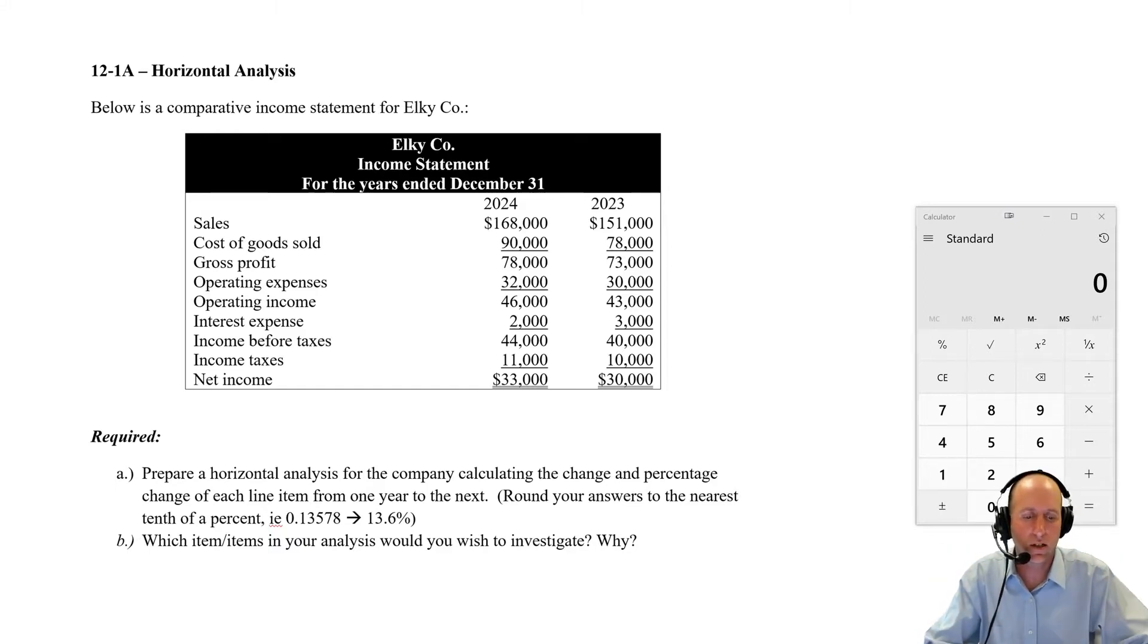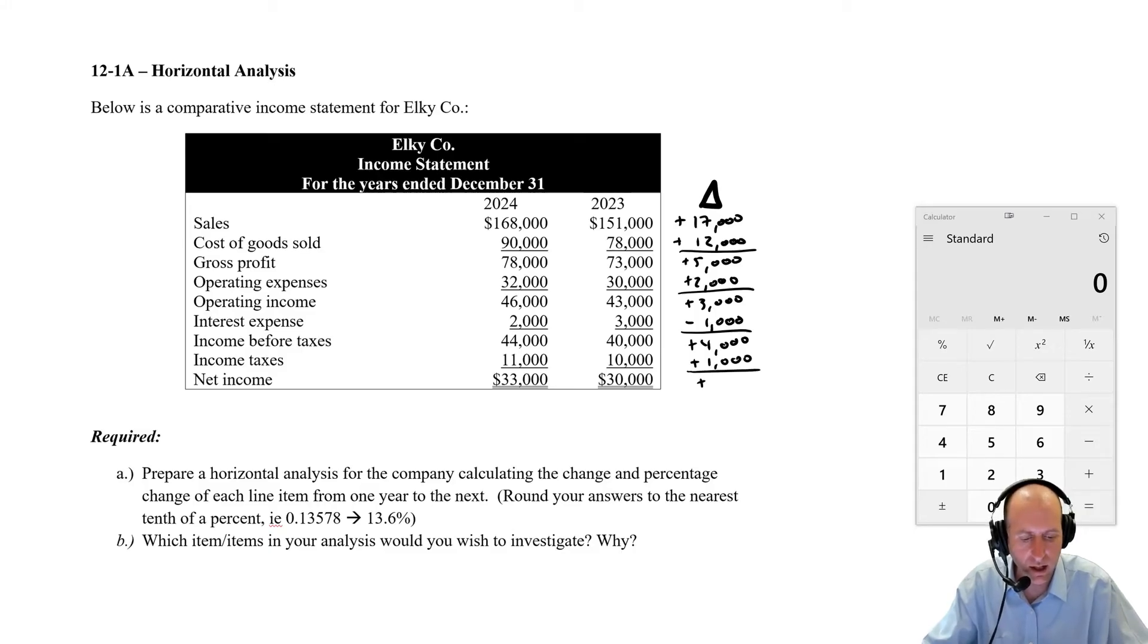So that's what a horizontal analysis sets out to do. And this is the most basic horizontal analysis. I put a triangle there. I'll put it in black ink. Triangle means change. And so our year over year change here is all we want to do. So 151 to 168 means it's a change of plus $17,000, right? Our sales are up $17,000. Our cost of goods sold up $12,000. Our gross profit up $5,000. Our operating expenses are up two. Our operating income up three. Our interest expense down $1,000. Our income before tax up $4,000. Our income taxes are up $1,000. And our net income is up $3,000.